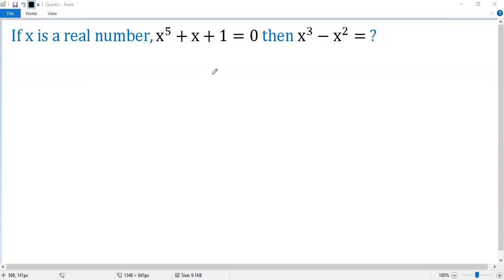Let's see how to solve this problem. We know x is a real number, x to the power of 5 plus x plus 1 equals 0. We need to find the value of x cubed minus x squared.